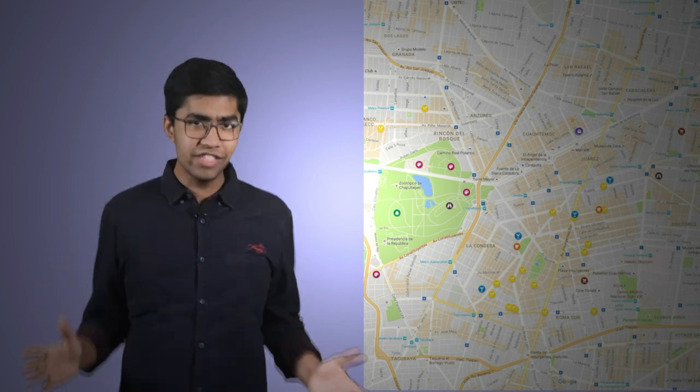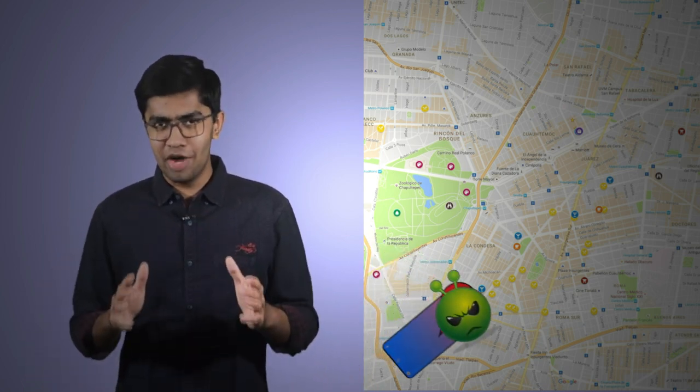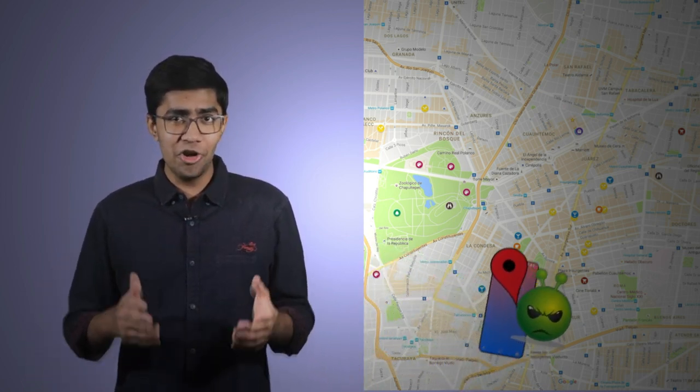Hello and welcome! Have you ever wondered how your phone figures out your location? It's crazy, right? In this episode of Scientify, let's try to understand how your phone's GPS works. GPS, or Global Positioning System, is a collection of satellites orbiting the Earth.